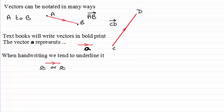So if I had a vector like this one, for instance, it might be called b. So if I was drawing it by hand, I'd just do b there with either a straight line underneath it or a squiggle.